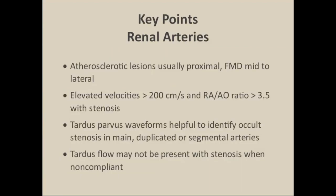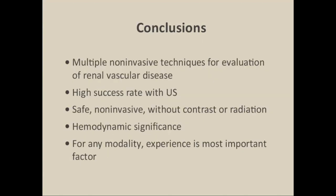In conclusion: atherosclerotic lesions are usually proximal, but with FMD they can be mid to distal in location. Elevated velocities greater than 200 cm/s and a renal aortic ratio greater than 3.5 are consistent with significant stenosis. Tardus-parvus waveforms are helpful to identify occult stenosis in the main, duplicated, or segmental branches — but you may not always find them in patients with non-compliant calcified vessels. Multiple non-invasive techniques are useful for evaluation of renovascular disease, and ultrasound offers high success rates while being safe, non-invasive, without contrast or radiation.